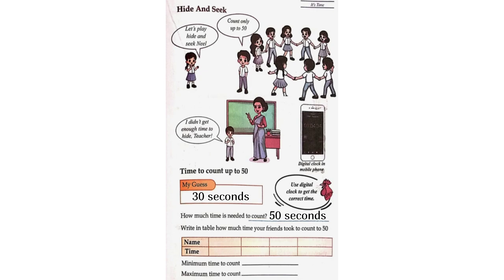Write in the table how much time your friends took to count to 50. Neil: 51 seconds. Tanu: 50 seconds. Mili: 50 seconds. Saya: 51 seconds. Minimum time to count: 50 seconds. Maximum time to count: 51 seconds.